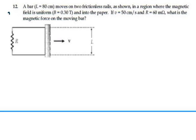Here's 3112. A bar 80 centimeters in length moves on two frictionless rails as shown in a region where the magnetic field is uniform and 0.3 tesla into the paper. If v equals 50 centimeters per second and R is 60 milliohms, what is the magnetic force on the moving bar?